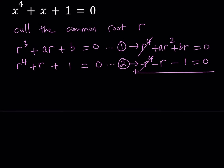Arranging the remaining terms, we get AR² + (B − 1)R − 1 = 0. This is a new equation and I'm going to call it equation number 3. So now we have three equations: 1, 2, and 3. Let's see how we can use these to find the common root R.